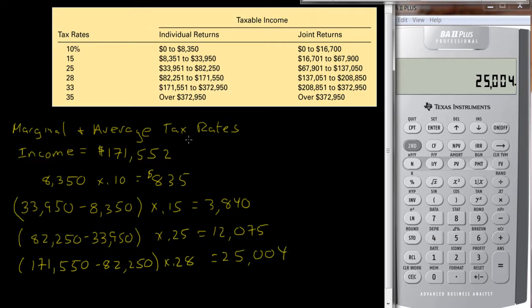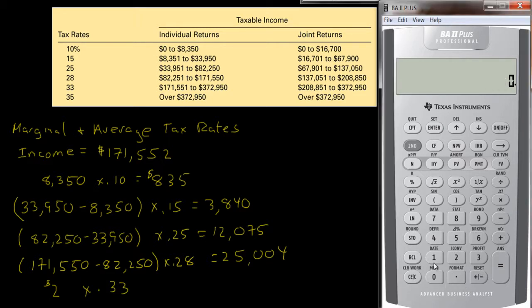And then now they make $1 over this, or actually I could say they have $2 in here, so their last $2 in income, since they made $171,552 and the cutoff was $171,550, so their last $2 will be taxed at the 33% rate. So they pay another $0.66 in taxes.